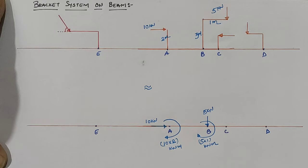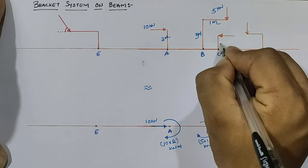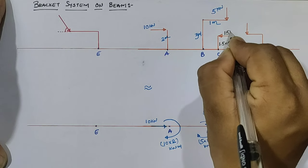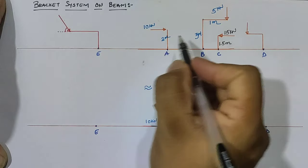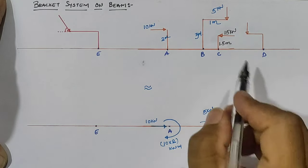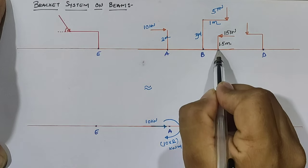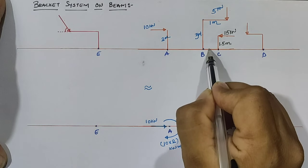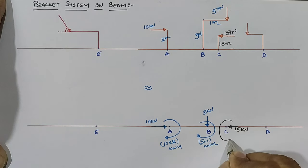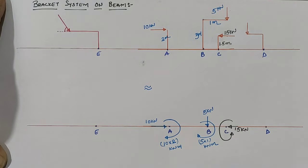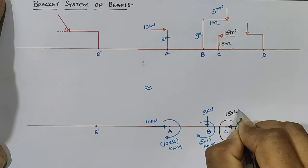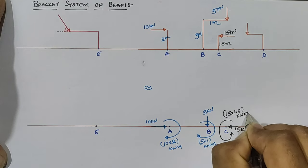At point C, the vertical column height is 1.5 meters and the load is 15 kN. Similar to point A, this 15 kN acts directly at point C in the horizontal direction, and it creates an anti-clockwise moment at point C with value 15 × 1.5. The equivalent beam at point C has 15 kN horizontal load and a moment of 15 × 1.5.